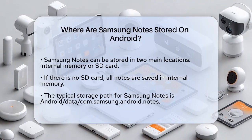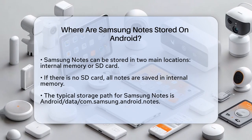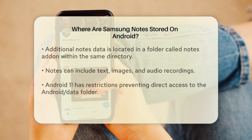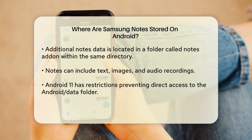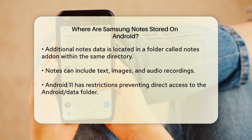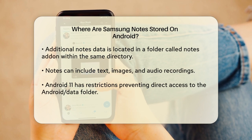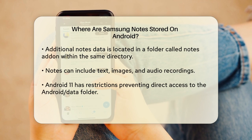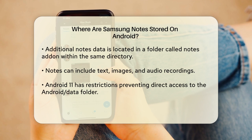If your phone doesn't have an SD card, all your notes will be stored in the internal memory. To be more specific, the data for Samsung Notes is typically stored in a folder named android-com.samsung.android.notes and also in a folder called Notes add-on within the same directory. This is where all your notes, whether they are text, images, or even audio recordings, are kept.